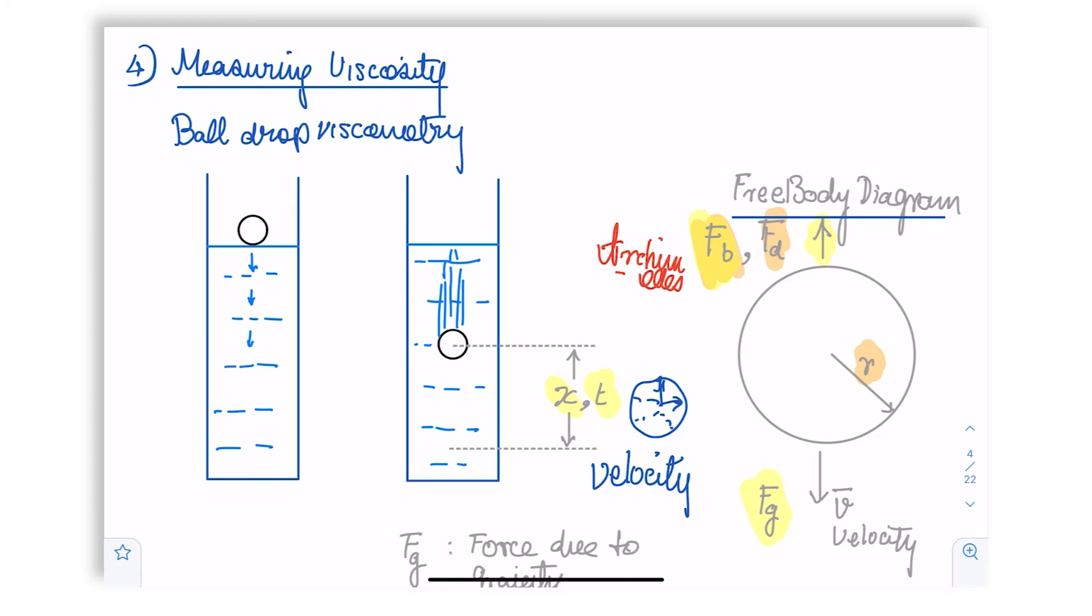And one instrument, a very simple conceptually simple instrument that is used to measure viscosity, is called a ball drop viscometer. And the method is called ball drop viscometry. As the name suggests, it involves dropping a ball through a long column of the fluid. So this is your fluid column here.